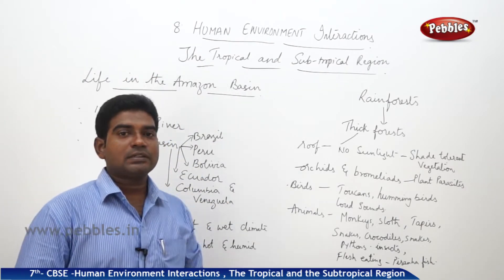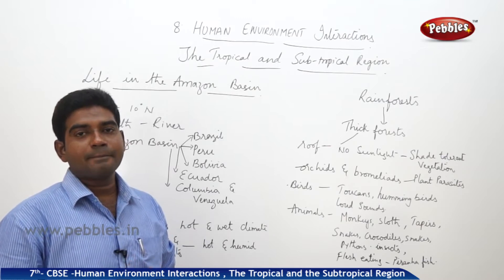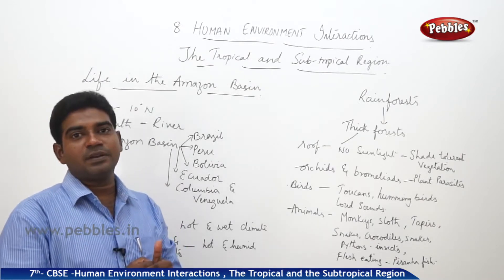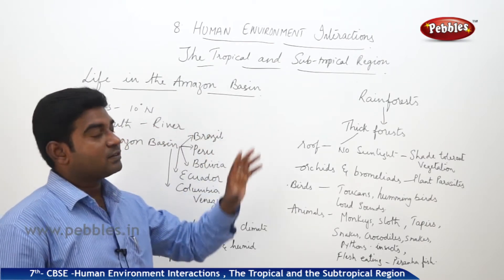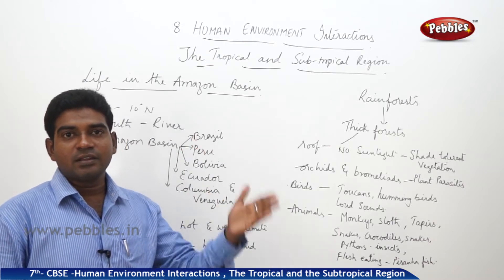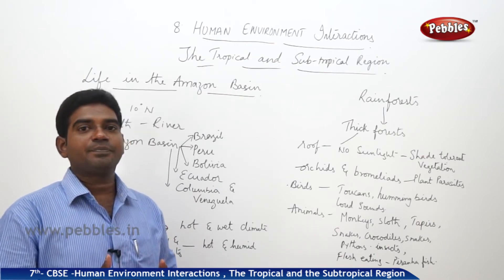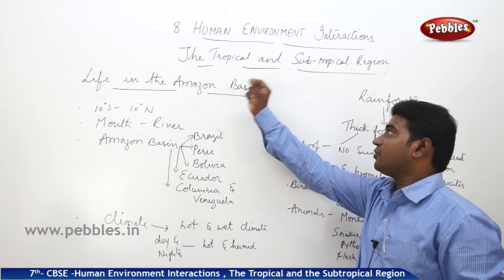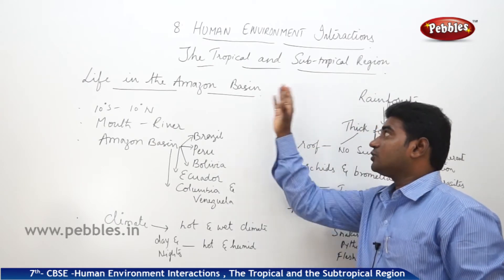Chapter 8: Human Environment. In chapter 7 we discussed transportation, settlements, and different means of transportation and communications. Now we will do case studies with different regions. In chapter 8 we'll discuss people staying in tropical and subtropical regions, chapter 9 the temperate region people, and chapter 10 the desert region people. In chapter 8 we are going to deal with the life of people in the tropical region and later do a case study on the subtropical region.